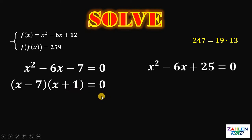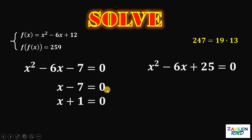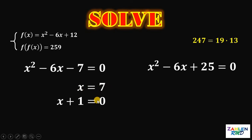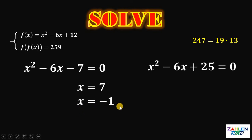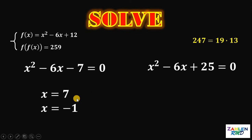This can be factored as x minus 7 multiplied by x plus 1. Again, since it is equal to 0, at least one of them must be equal to 0. Thus, x minus 7 equals 0 or x plus 1 equals 0. Solving the first equation, adding 7 on both sides, we get x equals 7. On the second equation, subtracting 1 on both sides, we get x equals negative 1. Therefore, we have two possible values for x: 7 and negative 1.